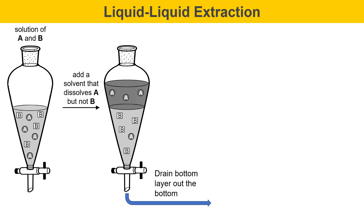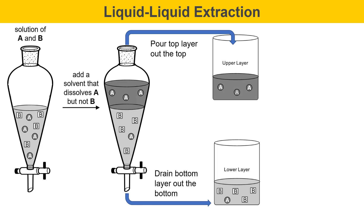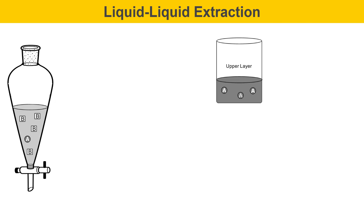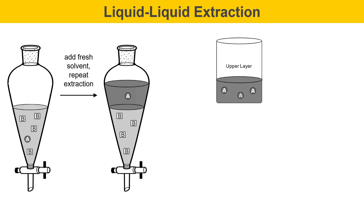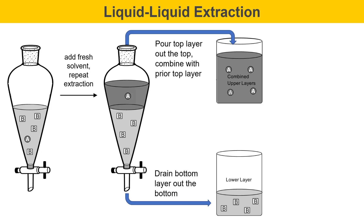Drain the bottom layer out the bottom and collect it in a beaker, then pour the top layer out the top of the separatory funnel to collect it separately. Now put that lower layer back into the separatory funnel to go after the remaining A molecules. I'll add a fresh portion of solvent and repeat the extraction. The hope is that the rest of the A molecules will migrate into the upper layer. Then drain the bottom layer out the bottom — now containing the B molecules — and pour the top layer out the top, combining it with the previous A layer to give a combined upper layer containing hopefully all of the A molecules.